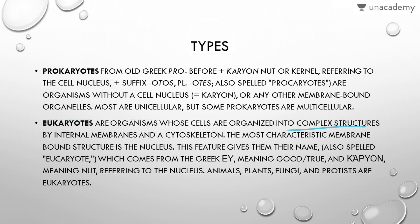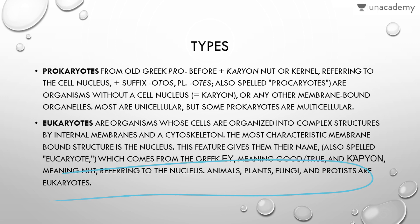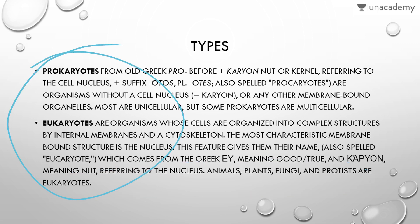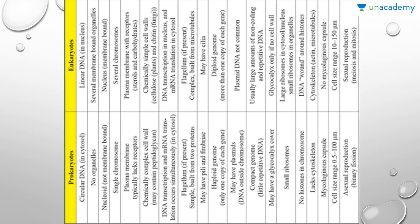Eukaryotes are organisms whose cells are organized into complex structures by internal membranes and a cytoskeleton. The most characteristic feature is the membrane-bound nucleus. The name 'eukaryote' comes from the Greek meaning 'good' or 'true' and 'karyon' referring to the nucleus. Animals, fungi, and protists are all eukaryotes because they have a well-defined nucleus and all organelles are membrane-bound with well-defined membranes.